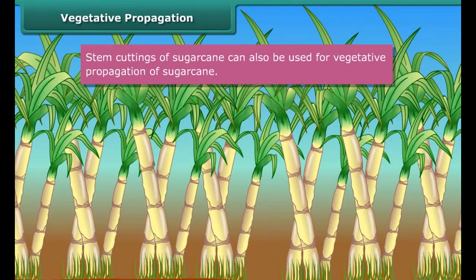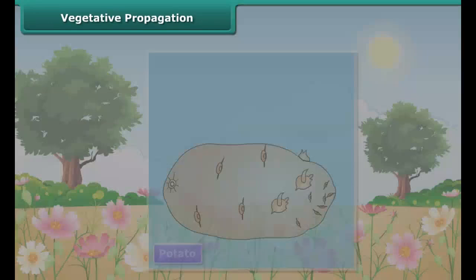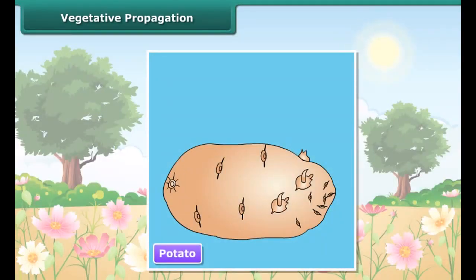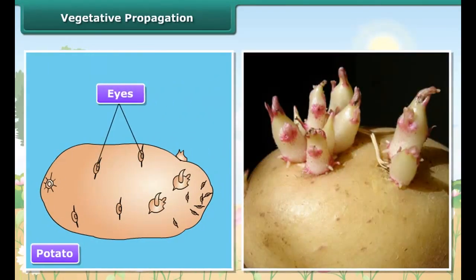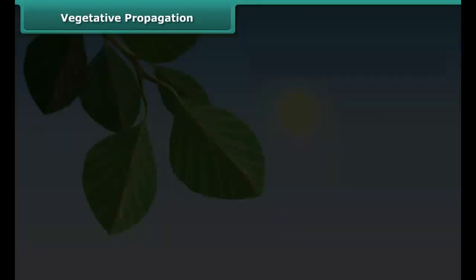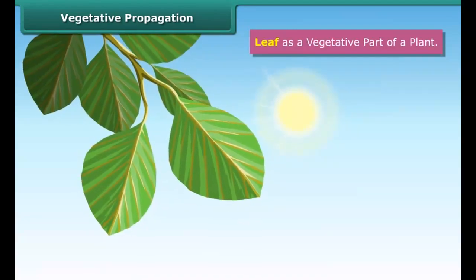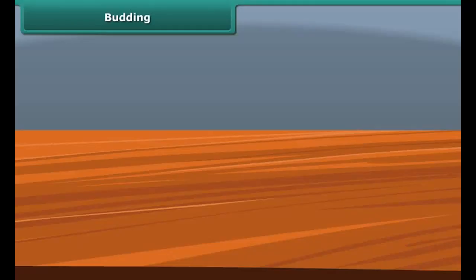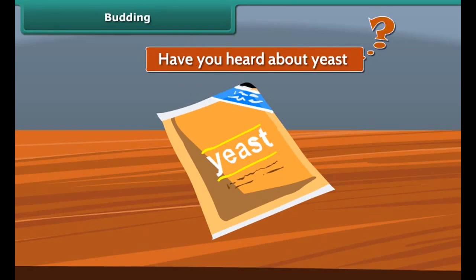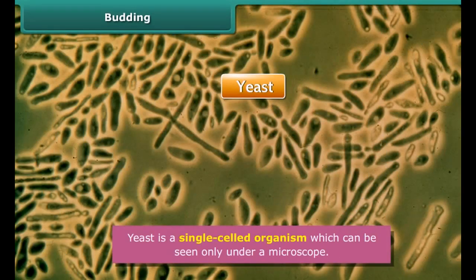Similarly, stem cuttings of sugarcane can also be used for vegetative propagation. Do you know potato is the edible stem of a plant? It bears small scars on it called eyes — these are the axillary buds. Each eye on a potato can give rise to a new plant by forming a shoot above and root below. In plants like bryophyllum, the leaf is the vegetative structure that helps in vegetative propagation. Many small buds arising at the margins of the leaves form new plants under suitable conditions.